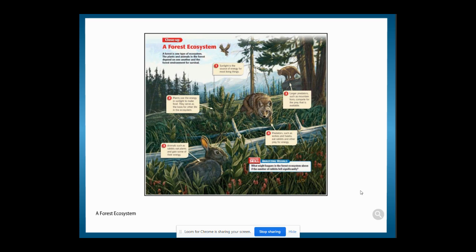Number 3: Animals such as rabbits eat the plants and gain some of their energy. Number 4: Predators such as wolves and hawks eat rabbits and other prey for energy. Number 5: Larger predators such as mountain lions compete for the prey that is available.